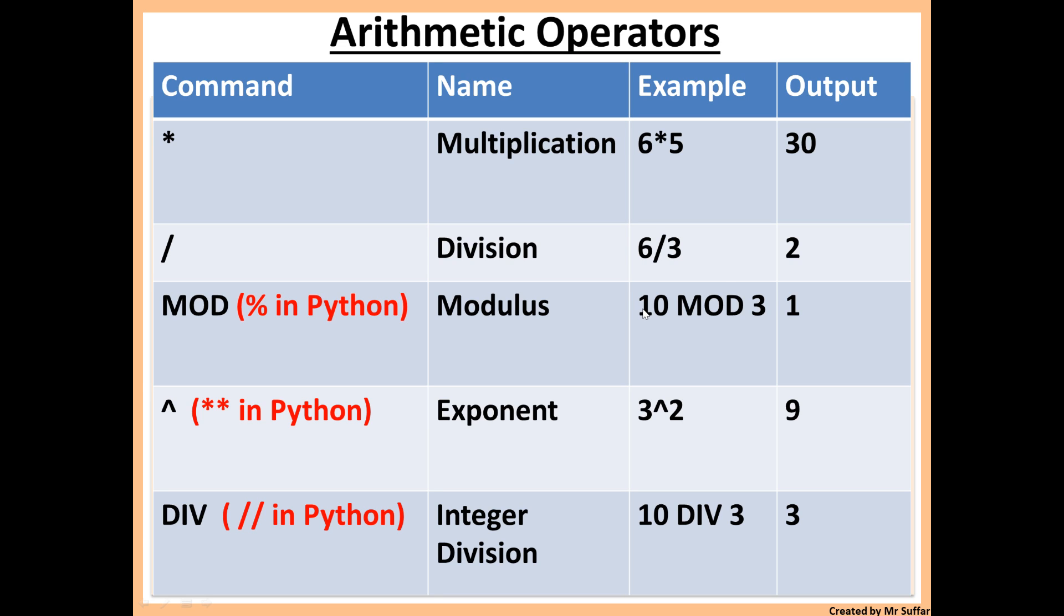The way I think about it is: can you divide 10 by 3 and get a whole number? No, so you go down to 9. 9 divided by 3 will give you a whole number. So the difference between 10 and 9 is 1.